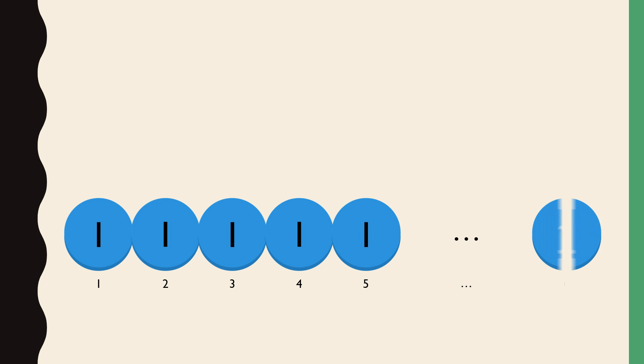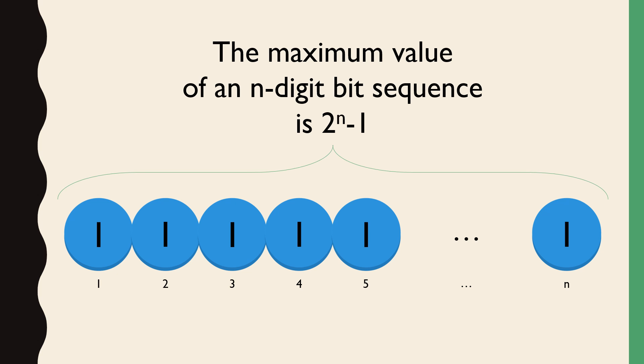To generalize this, if we have bits numbered 1, 2, 3, 4, 5, all the way up to n, the maximum value that we could store on this bit pattern would be the place value of the leftmost bit, 2 to the n minus 1.